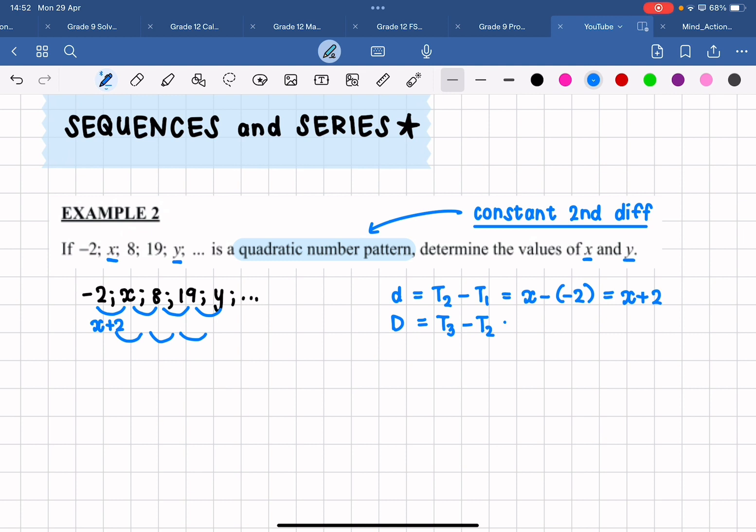Now if I'm calculating the next first difference, the difference between terms three and term two, I have to take term three which is eight, minus term two. It's always that way around. So this difference is going to be eight minus x. I am writing quite small because these differences are quite close together.